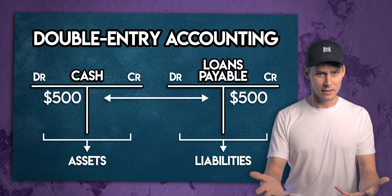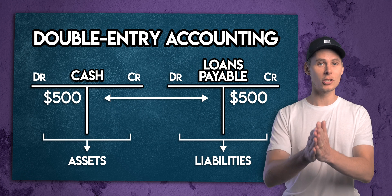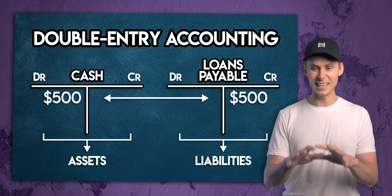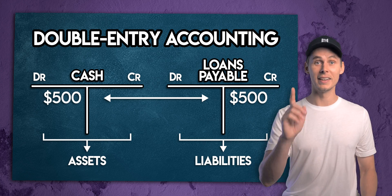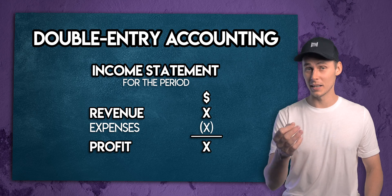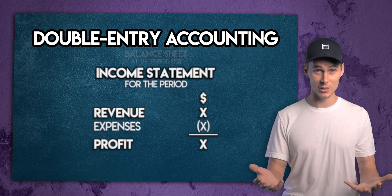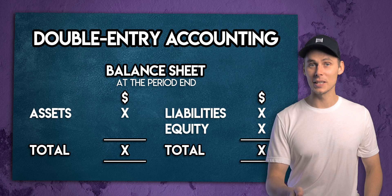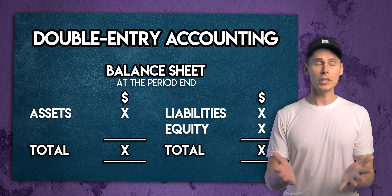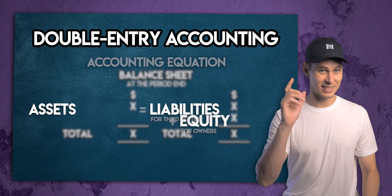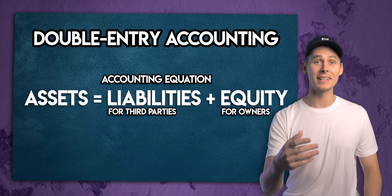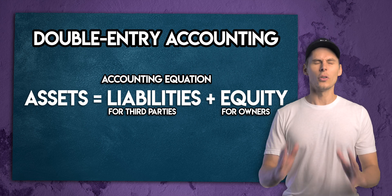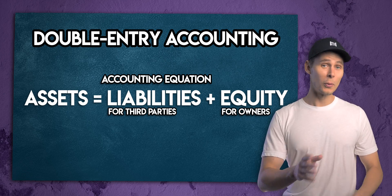By double entry accounting, a business can record its assets, liabilities, and equity in different accounts. Now it can measure its revenue and expenses in an income statement, and its assets, liabilities, and equity on a balance sheet — which is effectively a snapshot of the accounting equation at a point in time. Not even close to two minutes, but we'll get there.